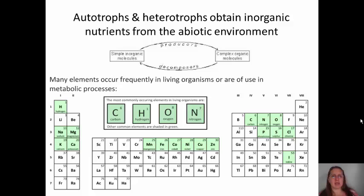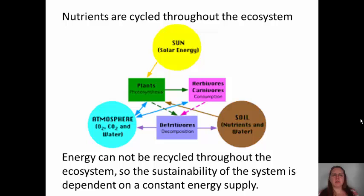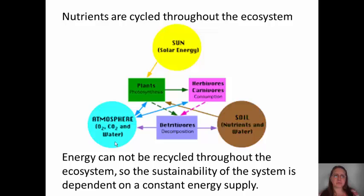Producers will take simple inorganic molecules and make complex organic molecules. Consumers will then consume those complex organic molecules. Decomposers will break those complex organic molecules back into simple ones so they can be recycled back through the ecosystem. Nutrients are cycled throughout the ecosystem — energy comes in from the sun, but nutrients move between plants, herbivores, detrivores, the soil, and the atmosphere. Energy cannot be recycled throughout the ecosystem, so the sustainability of the system is very dependent on a constant energy supply. We're actually going to make something called a mesocosm to see a sustainable system ongoing.